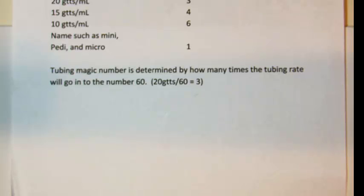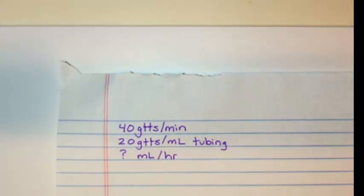Lastly, the tubing magic number determination is restated here with an example showing how the number is used.